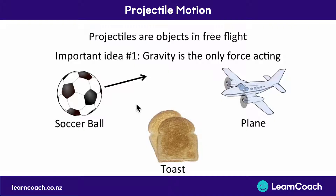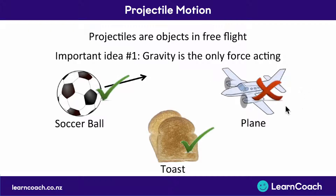For this whole topic we're going to be ignoring air resistance. The same with a piece of toast — as soon as it's left your plate it's free-falling straight down towards the ground with no forces apart from gravity. A plane, on the other hand, has thrust pushing it forwards and lift from the wings, so a soccer ball and toast would be projectile motion but a plane would not.